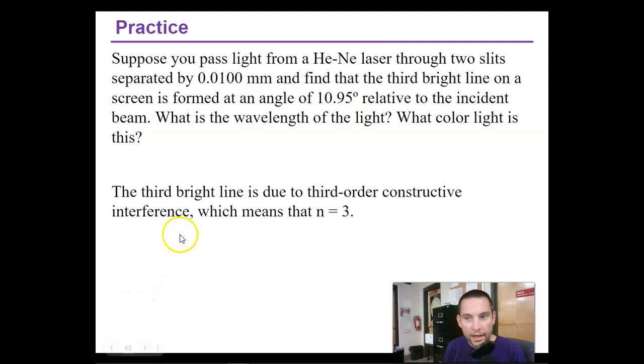The third bright line is a third order constructive interference, which means that n equals 3. We're given little d to be 0.01 and theta to be 10 equal, theta equals 10.95 degrees.